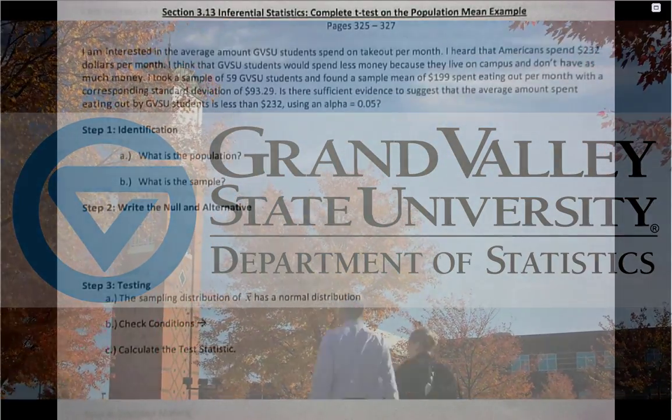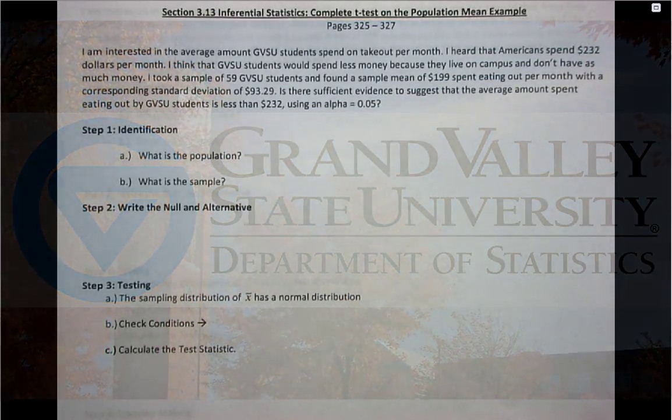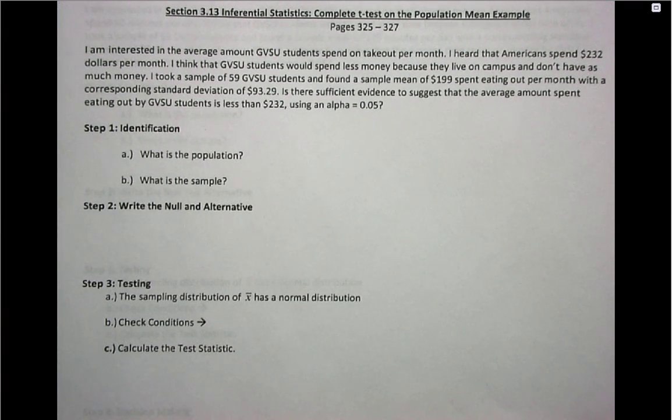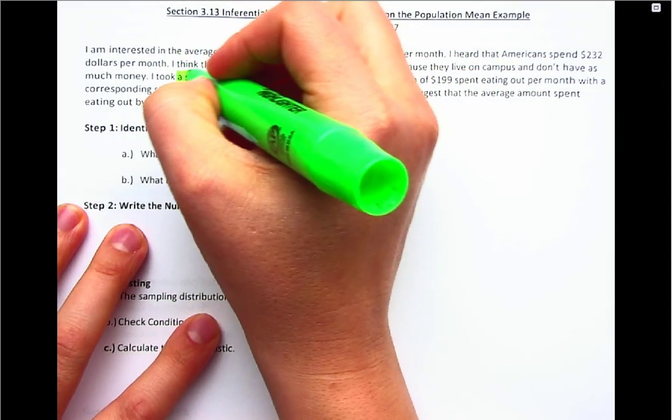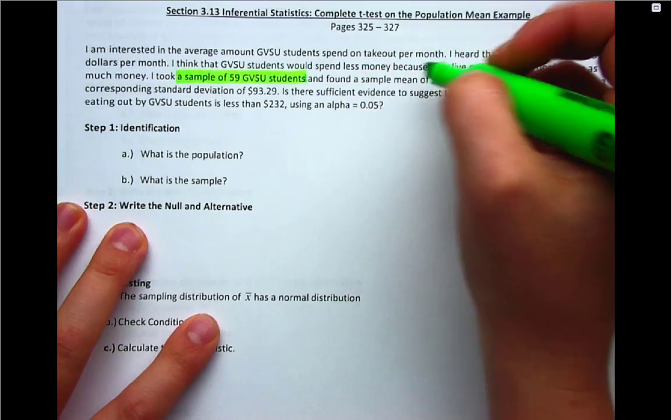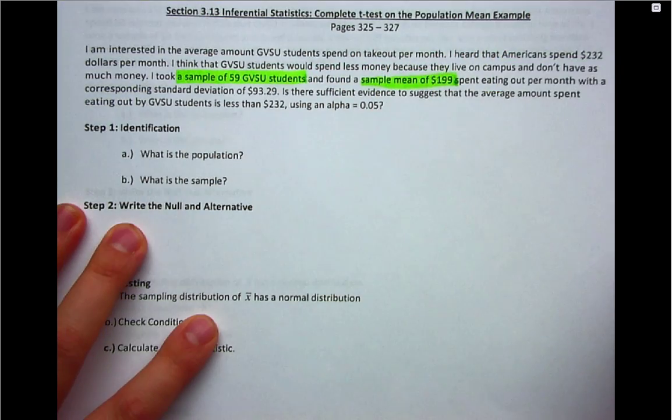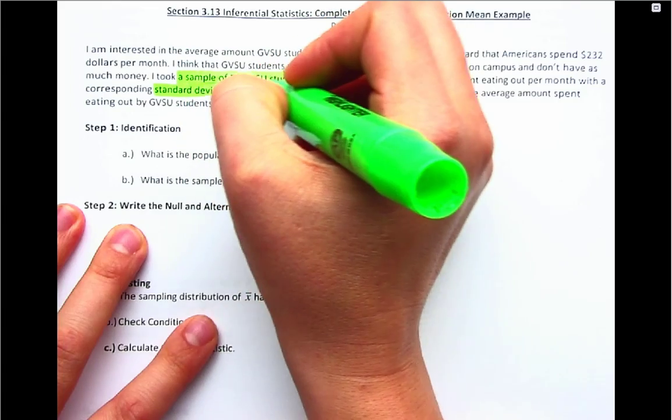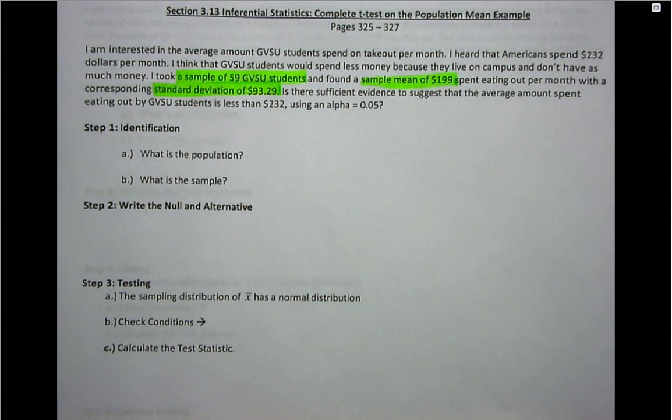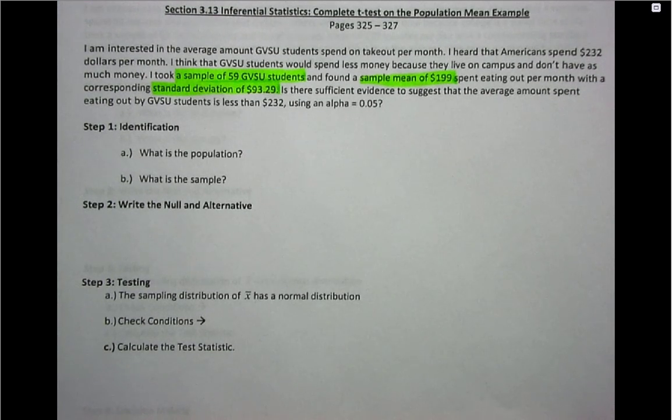Here we're going to look at our first example for calculating a hypothesis test for one population mean. When you're looking at these questions, there are three areas that you're interested in. The first is information on the sample. When I read this paragraph, I can see that the sample size is 59 GVSU students with a sample mean of $199 spent eating out per month, and then the sample standard deviation is $93.29. If you don't have raw data, you'll need three sample estimates: sample size, sample mean, and sample standard deviation.